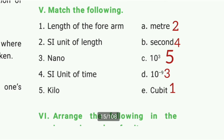Match the following. First one: Length of the forearm — cubit. Second one: SI unit of length — meter. Third one: Nano — 10 to the power of 9. Fourth one: SI unit of time — second. Fifth one: Kilo — 10 to the power of 3.